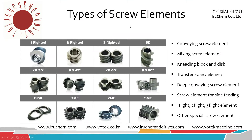Now I want to talk about screw element types. There are many kinds of screw elements. The most simple one is the conveying screw element, which pushes the material forward. The mixing screw element mixes the material together, and the kneading element works like pluggers to mix material together. The transfer screw element is an intermediate element used to transition between different types of screw elements.